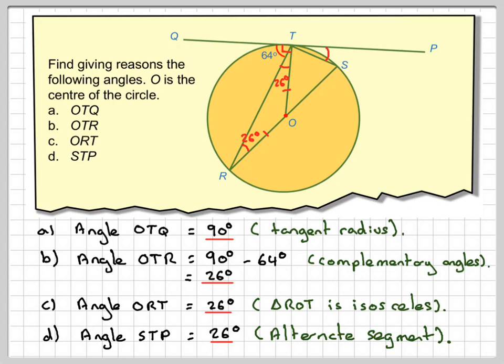OK, so this video shows you how to use the angle properties in a circle, and especially the alternate segment theorem, to find missing angles. I hope you've understood. And thank you very much for watching.